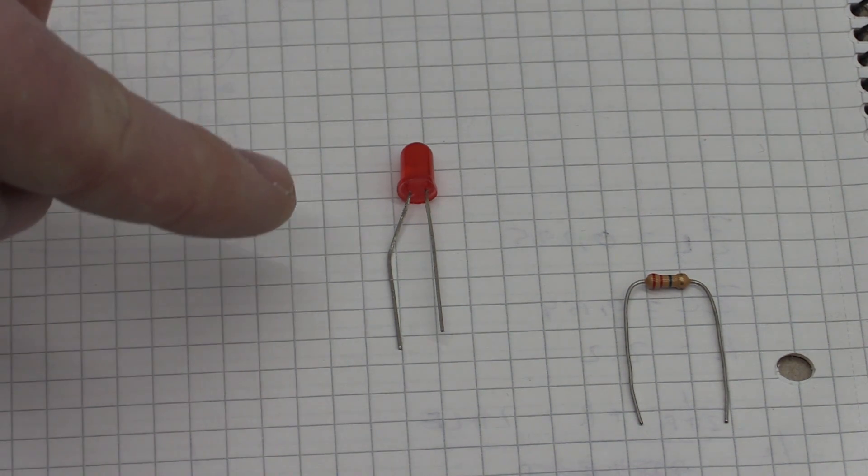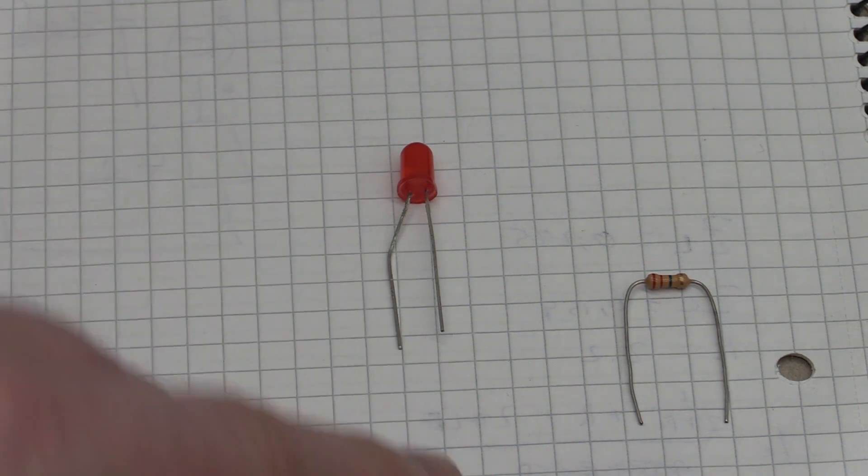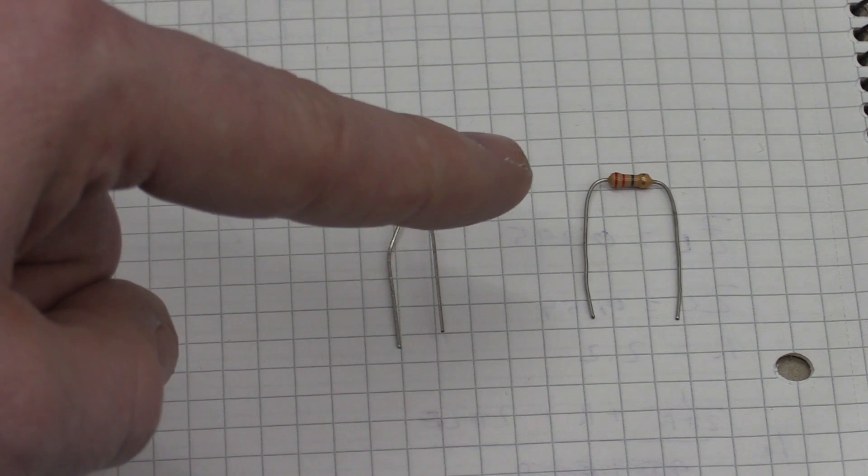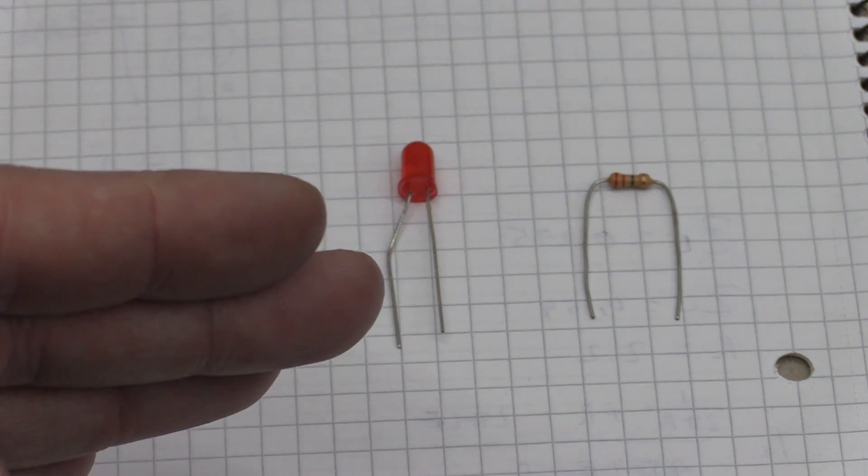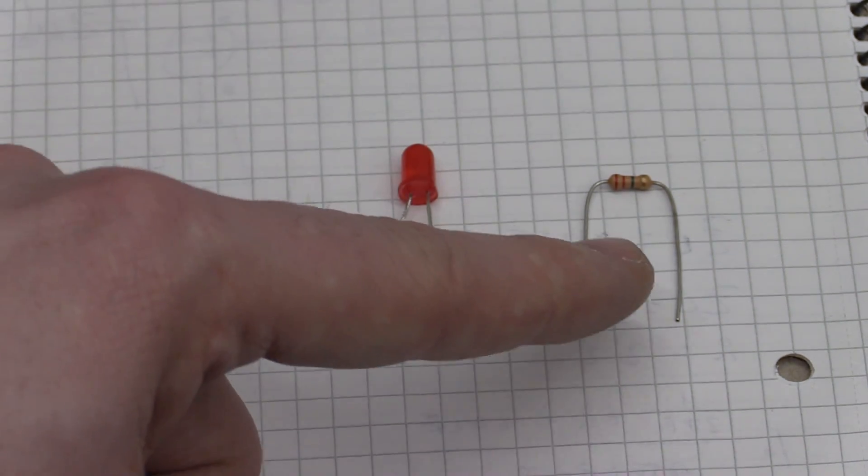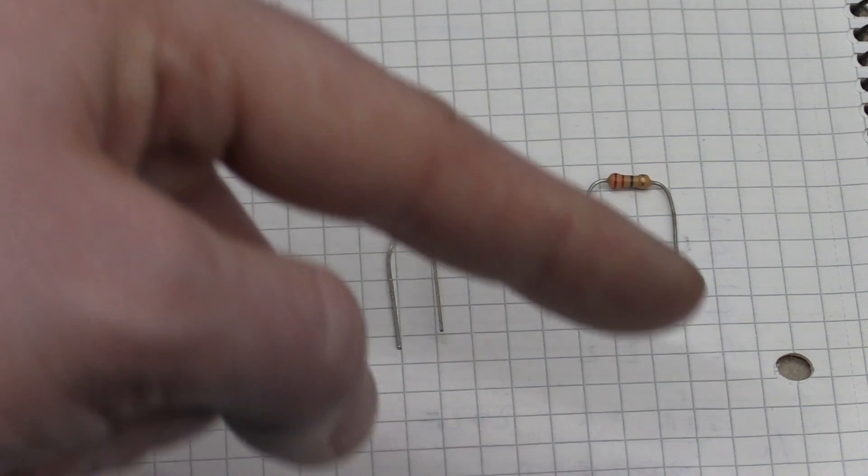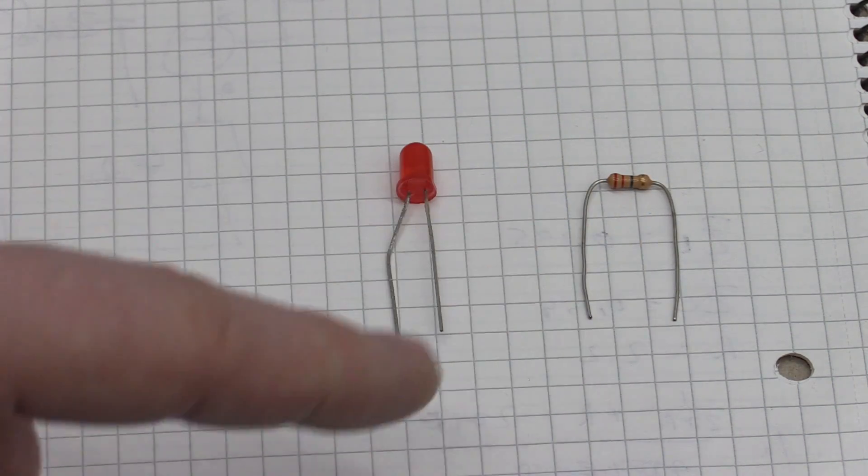That's because these LEDs love to go into a thermal runaway. A normal resistor here, it will have a positive temperature coefficient where as the temperature goes up, the resistance goes up. So that limits the current, it actually lowers the current when the temperature increases.